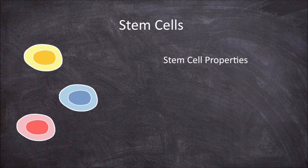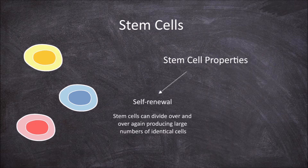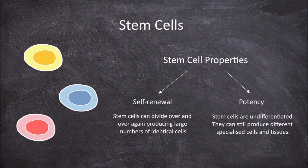The first property is self-renewal. Stem cells can divide over and over again; they can produce large numbers of identical cells. The second property is potency. Stem cells are undifferentiated, which means they can still produce different specialised cells and tissues.